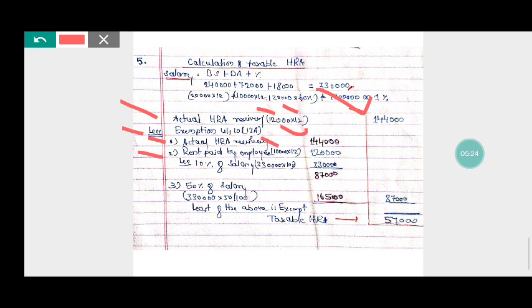Less 10% of salary. So 10% of salary, salary is Rs. 3,30,000, 10% of that is Rs. 33,000. So Rs. 1,20,000 minus Rs. 33,000 equals Rs. 87,000.